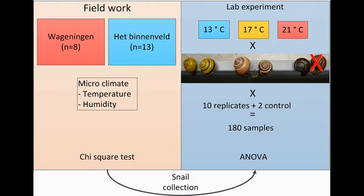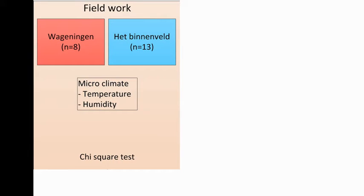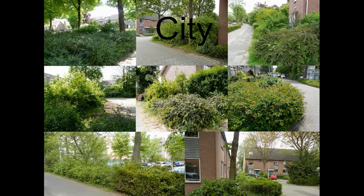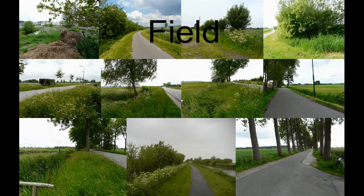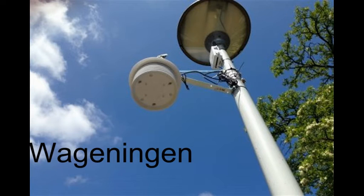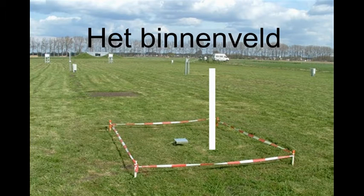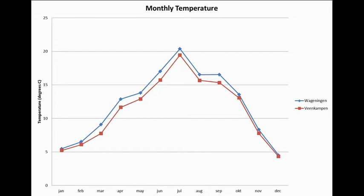In order to investigate these hypotheses and predictions, we set up a correlative field study and a manipulative lab study. In the correlative field study, we collected data from two locations. One is an urban and warmer area in the middle of the city Wageningen. The other is an open field and colder area, Het Binnenveld. At both locations, a weather station is present, which enabled us to calculate climatic differences between the two locations concerning temperature and humidity over a longer period of time. We found that Wageningen city is 0.8 degrees Celsius warmer on average than Het Binnenveld.